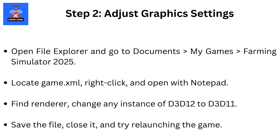Step 2: Adjust Graphic Settings. Open File Explorer and go to Documents, then My Games, then Farming Simulator 2025. Locate Game.xml, right-click, and open with Notepad. Find Renderer and change any instance of D3D12 to D3D11.